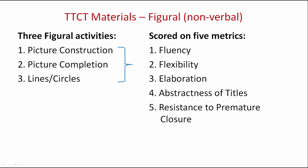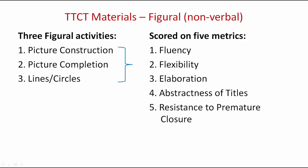We now move on to the second section of the Torrance Test of Creative Thinking. This section focuses on the figural, or non-verbal, also sometimes called pictorial, activities. There are three main figural activities: picture construction, picture completion, and another one called lines and circles. During these activities, examinees will generally be provided with sheets of paper which contain some form of abstract or incomplete symbols or shapes. The examinee will then be asked to make amendments or additions to the symbols or shapes in order to create something meaningful.